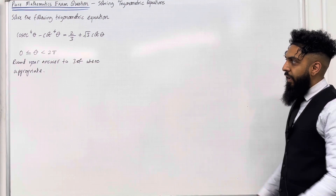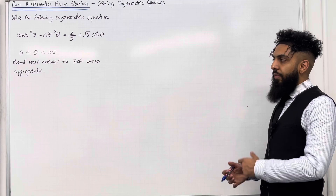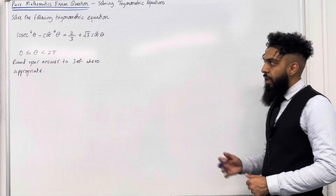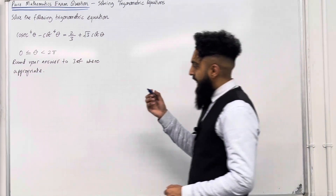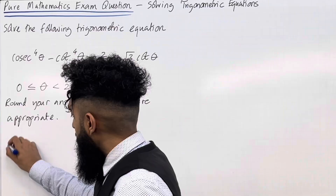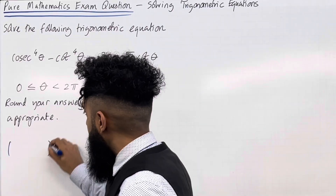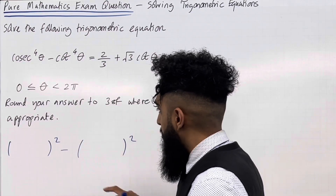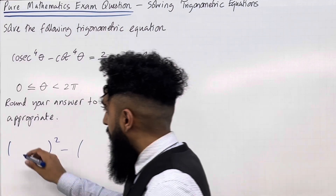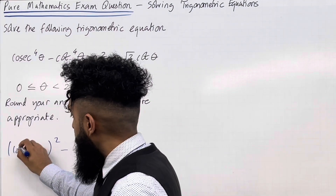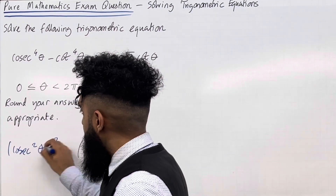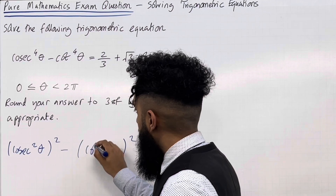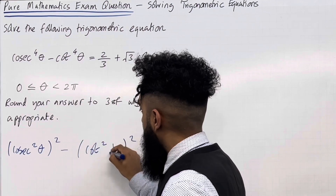Let's have a look at the solution. I'm going to start by rewriting the left hand side of this trigonometric equation. The left hand side can be rewritten as a bracket squared minus a bracket squared — inside the first bracket we put cosec squared theta, and inside the second bracket we put cot squared theta.